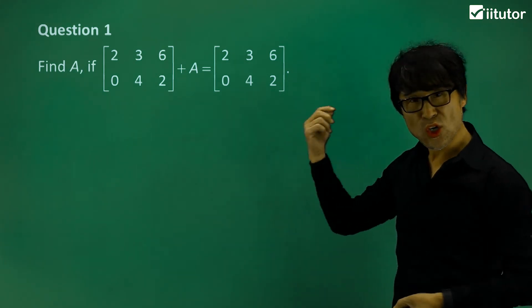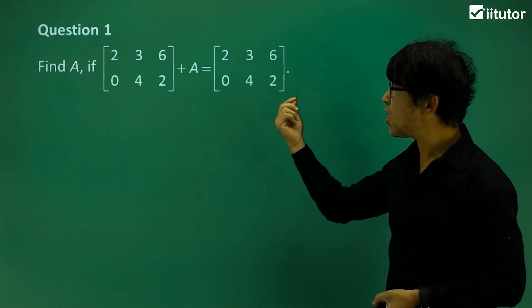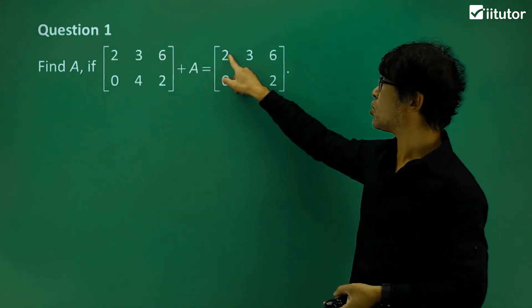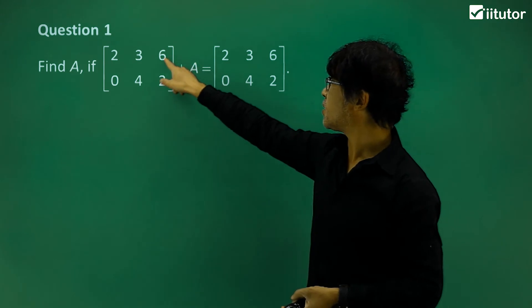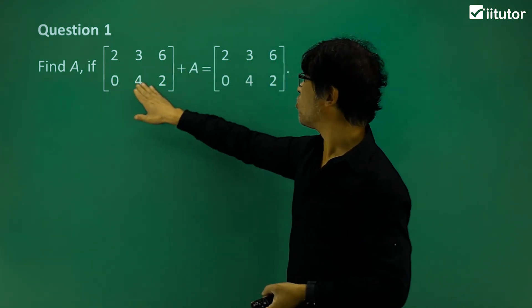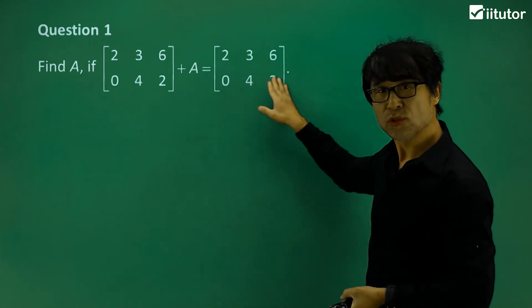What about their content, their numbers of the elements? Say two is equal to two, three is equal to three, six is equal to six. Can you see? What else? Zero, four, two. Zero, four, two. Yeah, they are equal.